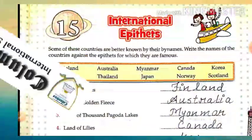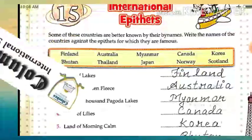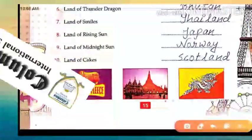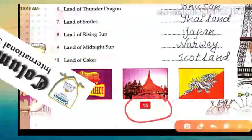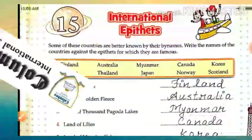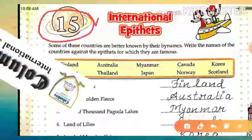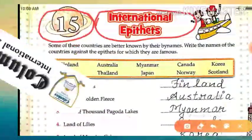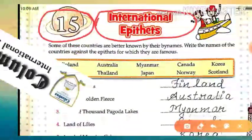So today I'm here with the next chapter, which is Chapter 15. Let me show the page number also — page number 15. So all of you take out your book and open page number 15. There you will have Chapter 15, and the name of the chapter is 'International Epithets.' Today we will read about some epithets which are about the international level.